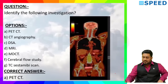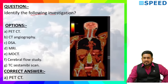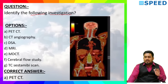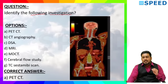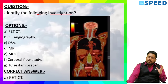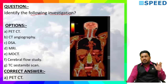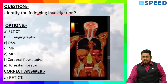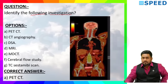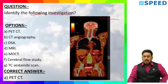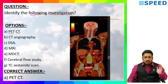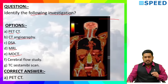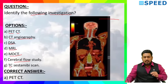Next question: Identify the following investigation. This is a diagram taken from head up to the thigh bone level. The options are positron emission tomography, CT scan, CT angiography, digital subtraction angiography, magnetic resonance imaging, multi-detector CT, cerebral blood flow study, and technetium sestamibi scan.